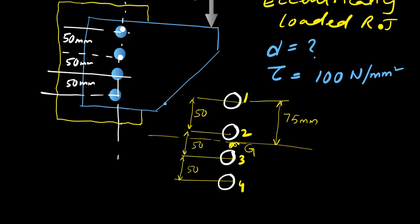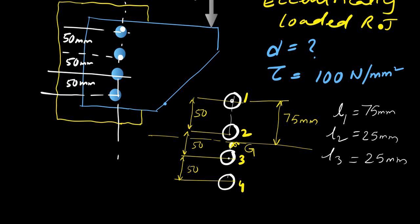Now calculate the distance from the center of each rivet to the CG. L1 (rivet 1 to CG) = 75 mm, L2 (rivet 2 to CG) = 25 mm, L3 (rivet 3 to CG) = 25 mm, and L4 (rivet 4 to CG) = 75 mm. So L1 equals L4, and L2 equals L3.